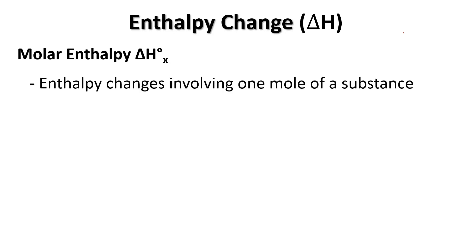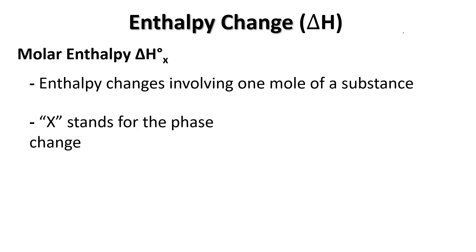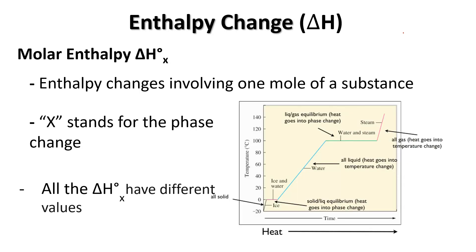Let's talk a little about molar enthalpy. Enthalpy changes involve one mole of a substance, and the subscript x stands for the phase change — and there can be many values for x. For example, ice melting is gaining energy: solid to liquid, and then liquid turning into a gas. Anytime we talk about a delta H, we can use a different subscript word there. There are some examples on the next slide as well.